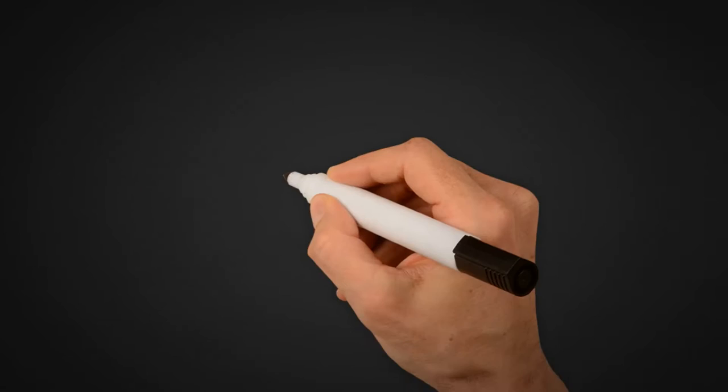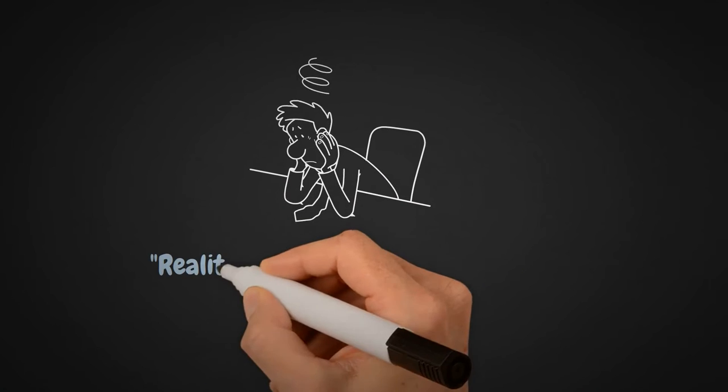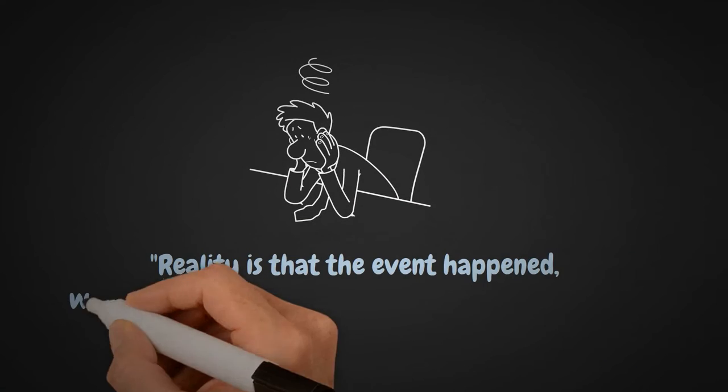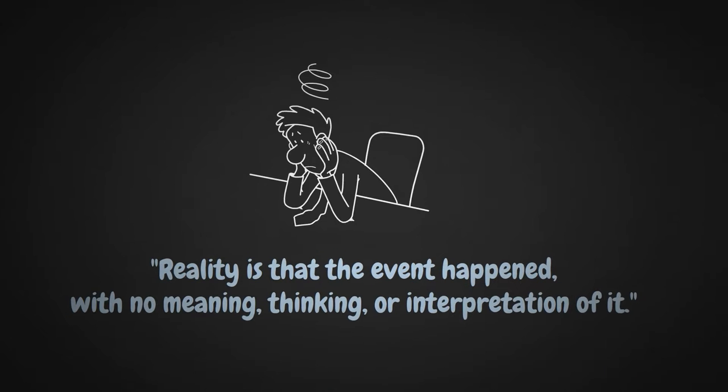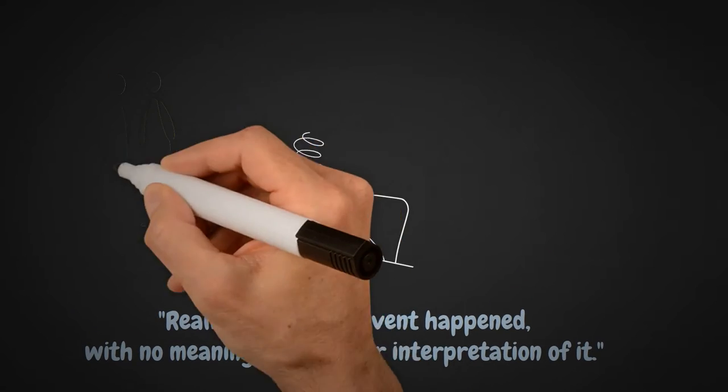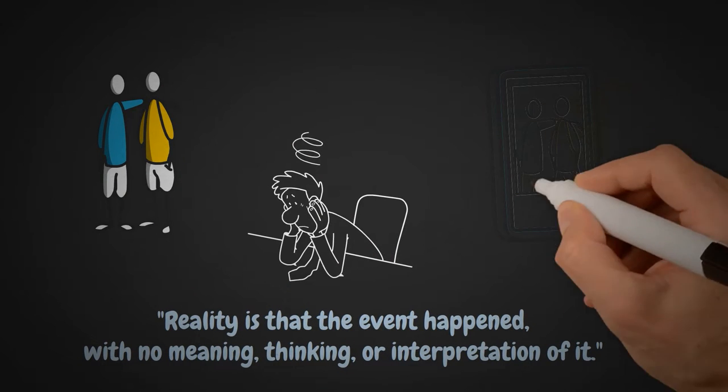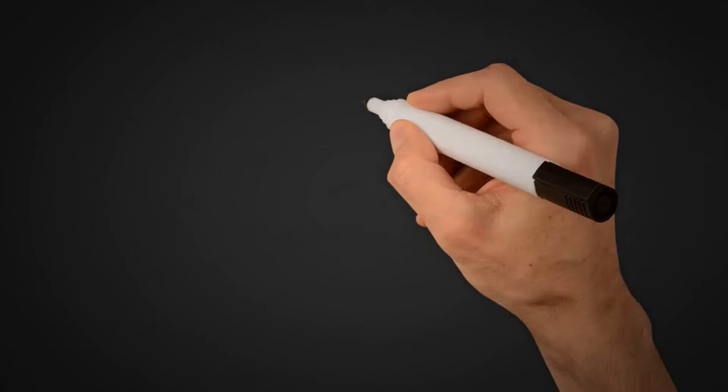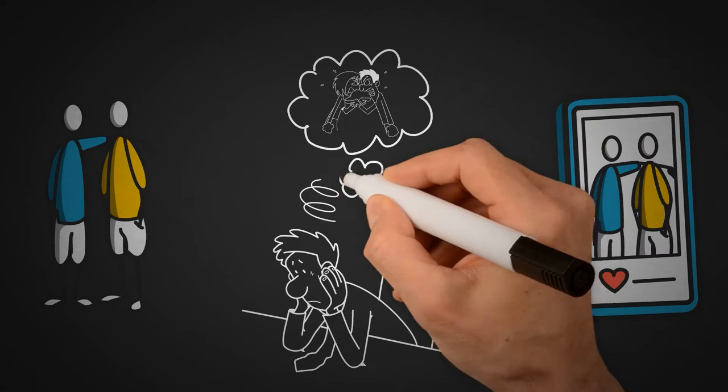Nguyen talks about our understanding of reality and how our thinking affects it. He says reality is that the event happened with no meaning, thinking, or interpretation of it. Reality is neutral and without meaning until you impose on it your own meaning and interpretation. External events do not affect how you feel. Instead, your own understanding and interpretation of them affect your emotions.